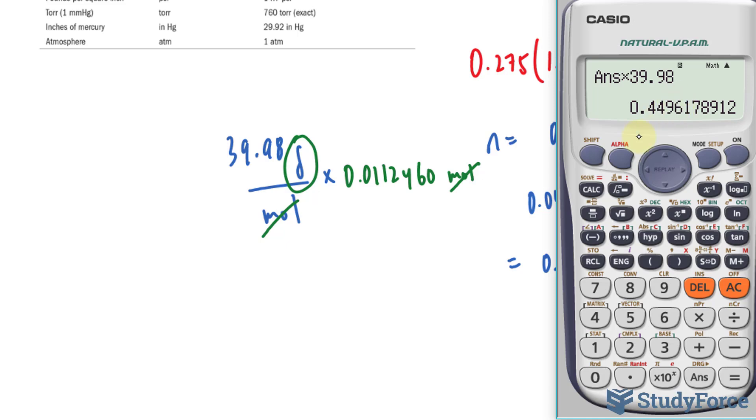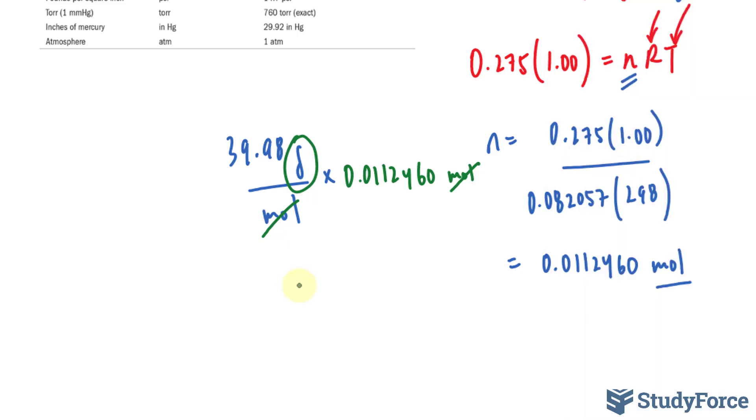This means that the mass of argon here is 0.449. Anything after that 9 is insignificant, because this number should be 3 significant figures, and this is an exact number, so we're going to keep that the way it is. So everything after this 9 is insignificant, and because this 6 is greater than 5, this 9 goes up. So we have 0.450 grams of argon.